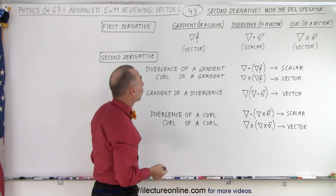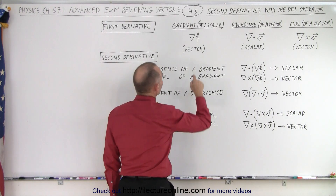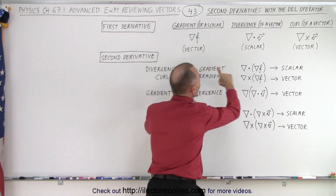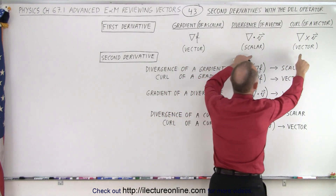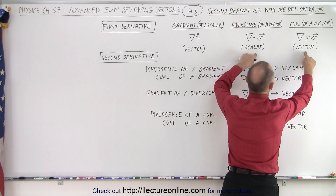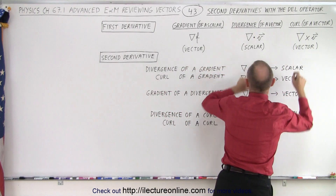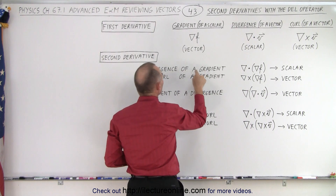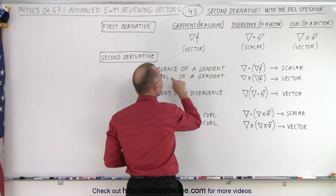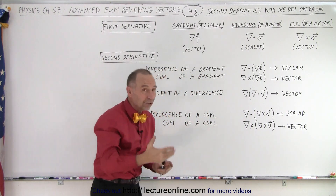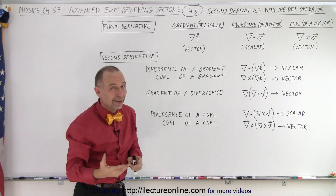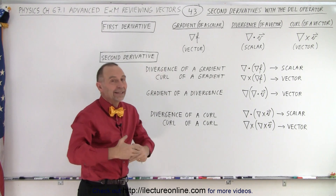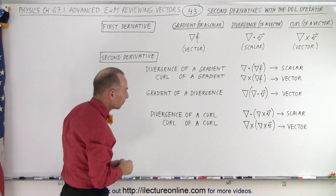For example, when you do a gradient you end up with a vector, which means you can only do two operations as a second operation. You can do the divergence of a gradient and the curl of a gradient, but you can't do the gradient of a gradient — because the gradient gives you a vector and you can't take the gradient of a vector.